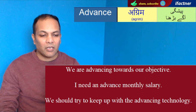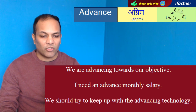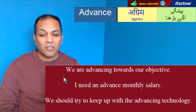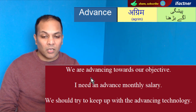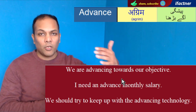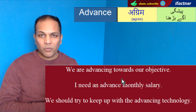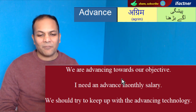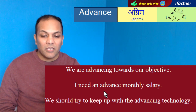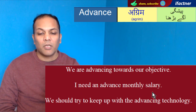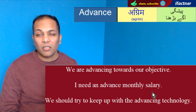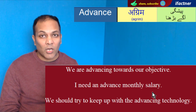Word hai 'advance'. Meaning hai agrim, paishgi, aagay barna. Example sentences: 'We are advancing towards our objective.' — Hum apnay objective ki taraf aagay barh rahay hain. 'I need an advance monthly salary.' — Mujhay aik mehinay ki paishgi agrim tankhwa chahiye hai.